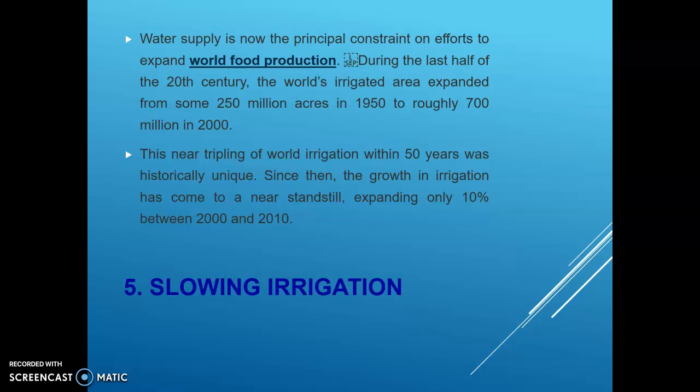World food production is constrained by water supply. The constraints on expanding water supply can also affect the slowing of irrigation for crops and for agriculture productivity.